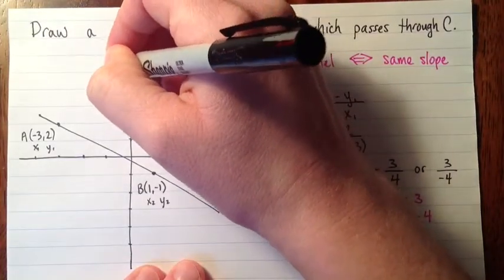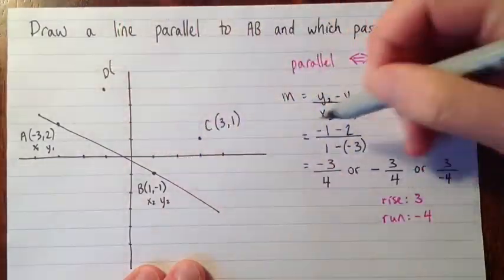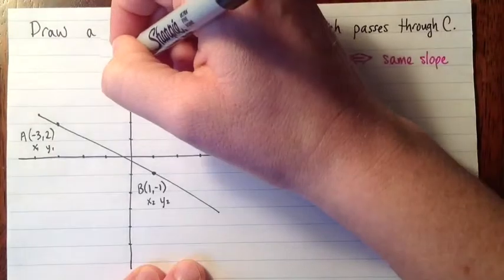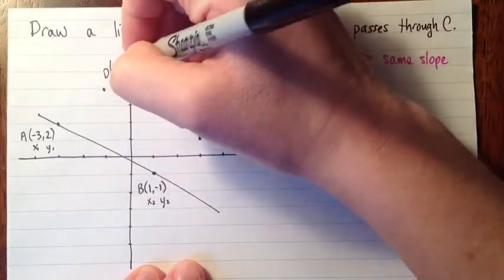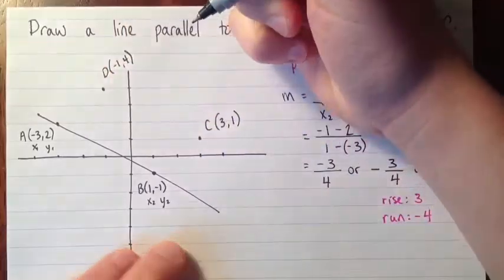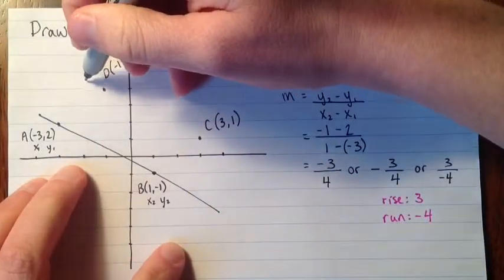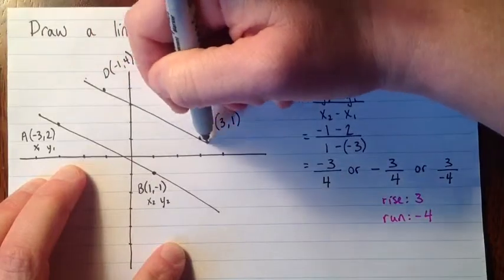So this, we'll call that point D, I guess. We've got ABC. So that is the point negative 1, and then 1, 2, 3, 4. So then this line will be the line that goes through these two points.